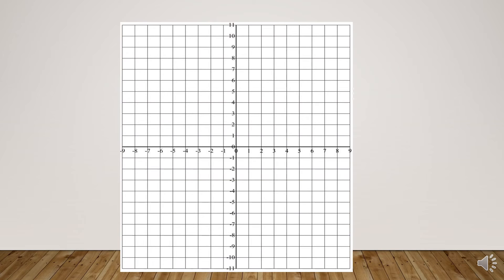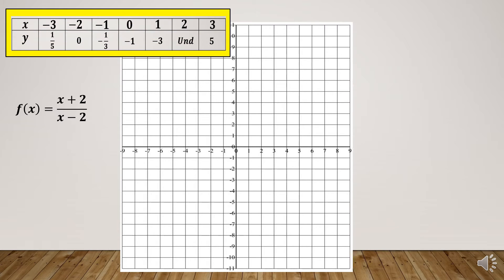Now let us sketch the graph of f of x equals x plus 2 all over x minus 2 using the table of values. The first thing we need to do is check which value of x makes the function undefined. Since y is not defined when x equals 2, we draw a vertical broken line at x equals 2. Then we plot the remaining points: negative 3 and 1 fifth; negative 2 and 0; negative 1 and negative 1 third; 0 and negative 1; 1 and negative 3; and 3 and positive 5.